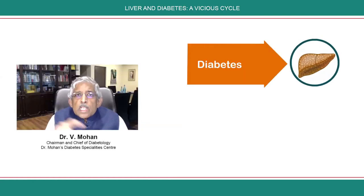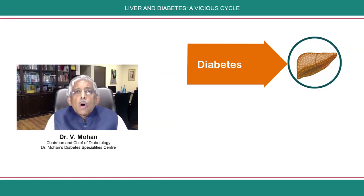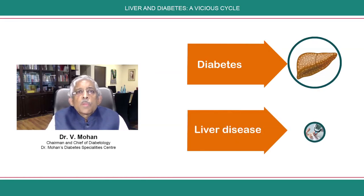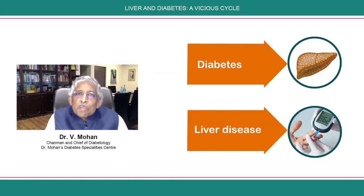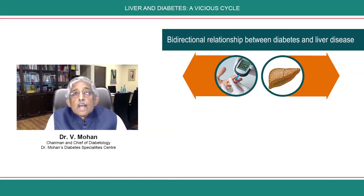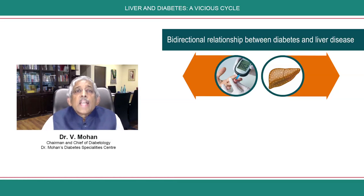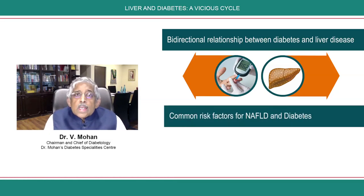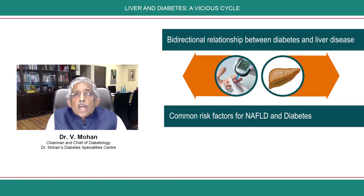Does diabetes produce liver disease, or does liver disease produce diabetes? The answer is both are correct. There is a bi-directional relationship. We know that they have common antecedents — the risk factors are the same both for chronic non-alcoholic fatty liver disease as well as for diabetes.